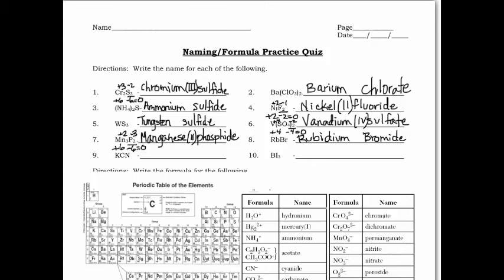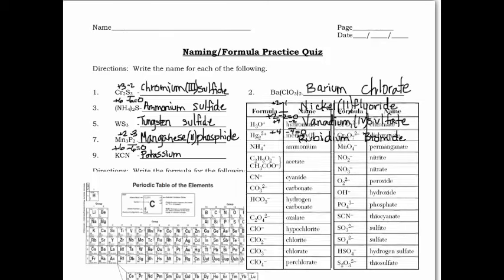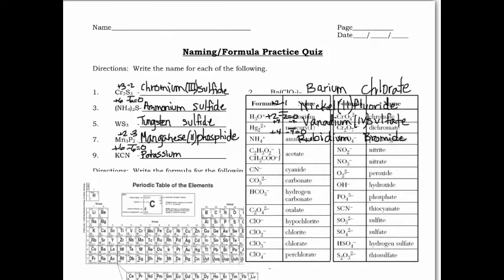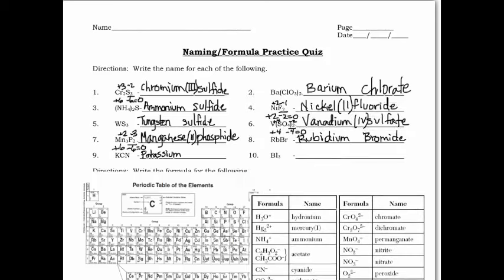Number nine has three elements, so we have a polyatomic ion. It's not going to be the positive part because it's none of the ones listed, so it must be the second half. We name K as potassium, leave a space, then find CN in Table E. CN is cyanide — so potassium cyanide. Potassium has just one positive oxidation number, so we're done.